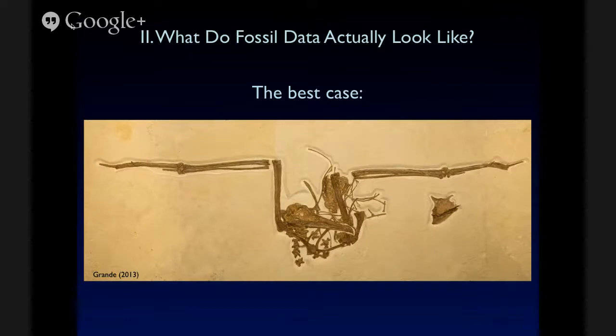Okay, so question two, what do fossil data actually look like? This is the best case scenario. This is Limno fragata, a fossil frigate bird from the Field Museum of Natural History Collection. And this is a complete articulated skeleton. You can basically get just about every piece of information on skeletal morphology from this specimen as you could from a fresh skeleton of an extant bird. But this is the exception and not the rule. These are the fossils we see in museums. These are the types of fossils that are often holotypes or are given names because they're so complete and informative and aesthetically pleasing.